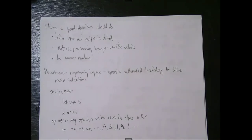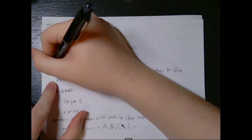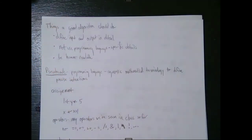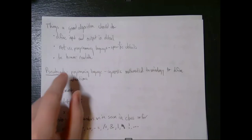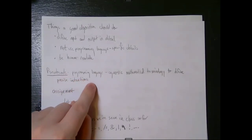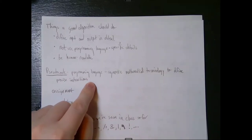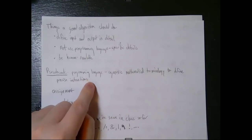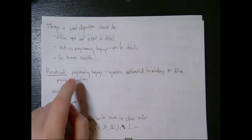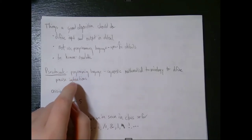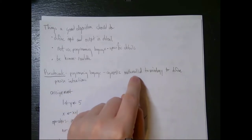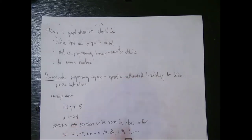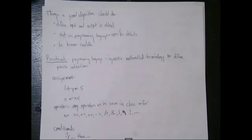The way we're going to describe algorithms to accomplish all of those goals is using something called pseudocode. It's not quite code — it's sort of code-like but not. It's a mathematical language used to describe precise operations. It's programming language agnostic, meaning it doesn't really look like any particular programming language. Maybe it looks a little bit like Python, but the big thing is it uses mathematical terminology to define precise instructions without programming language specific syntax.